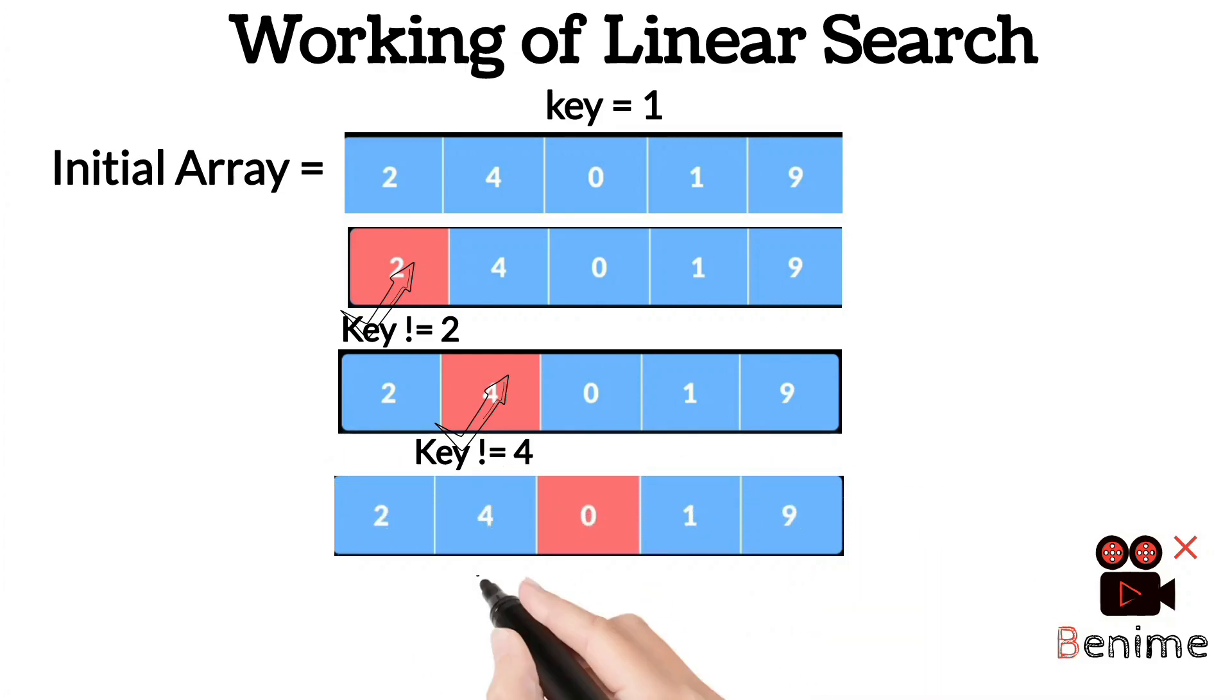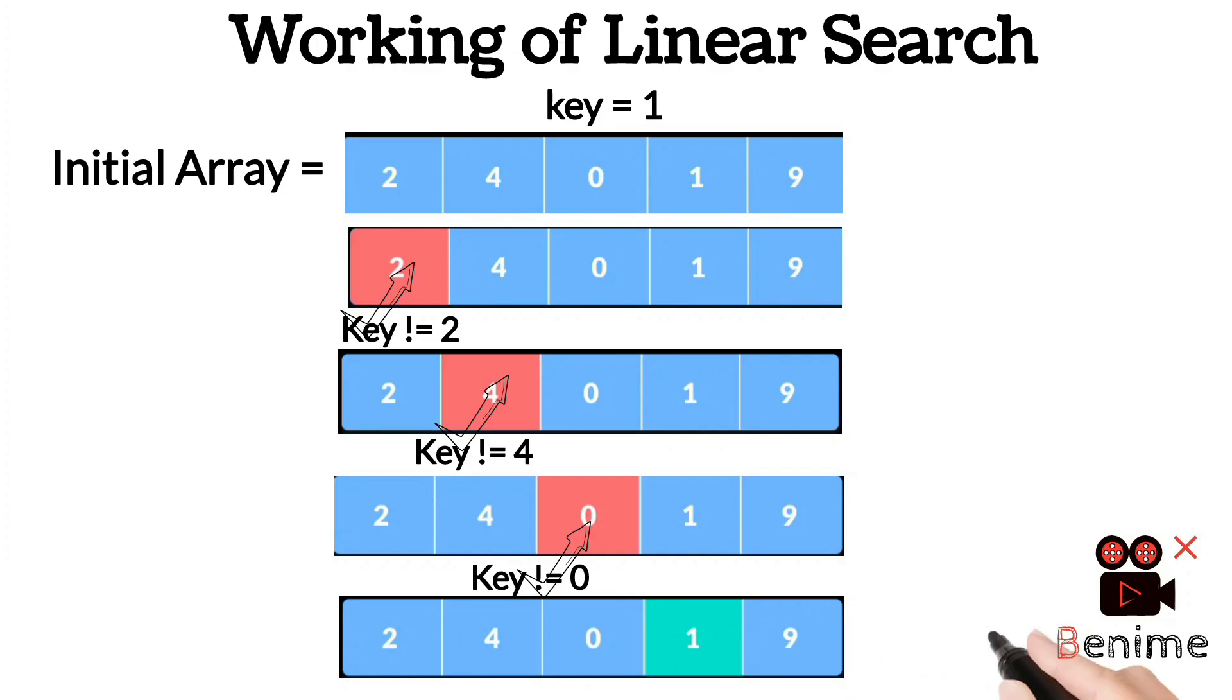In the third iteration, the element 0 is found. The key element is not equal to 0, so this condition is again false. In the fourth iteration at the third index, the key element 1 is found. So this 1 and the key 1 are equal - the key is found.